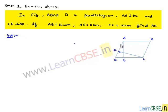Now, moving on to solution. This is the figure we consider in which the given values are AB is equal to 16 cm, AE is equal to 8 cm, CF is equal to 10 cm and he asked us to find the value of AD.